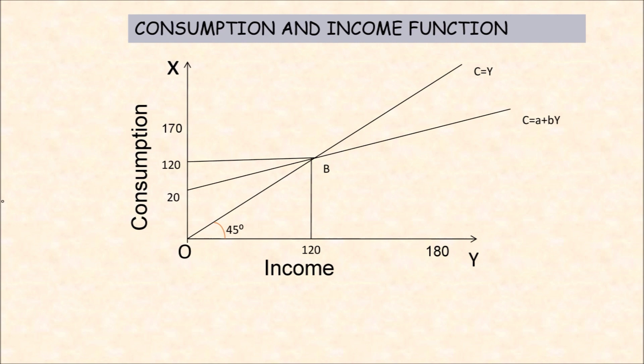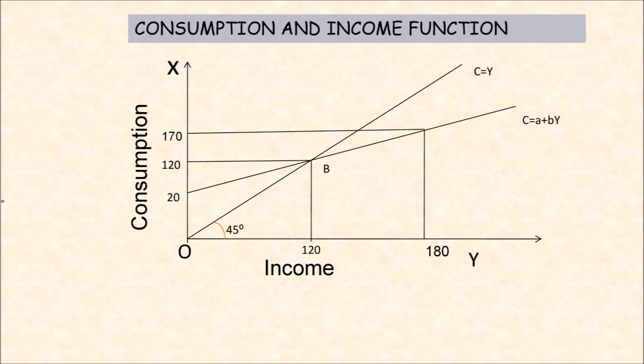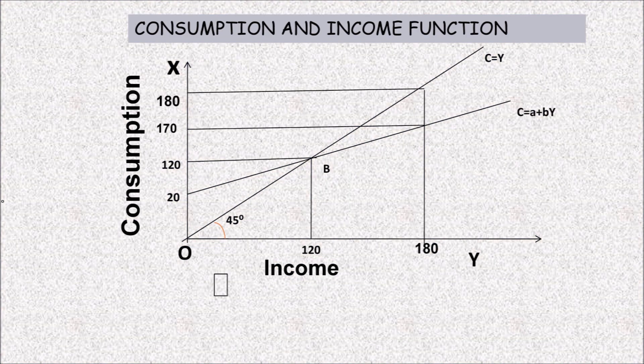Now plot a point where there is an increase in the level of income, which leads to an increase in the level of consumption. Draw a line joining both income and consumption. The income increases and consumption also increases, but not by the same amount as the increase in income.